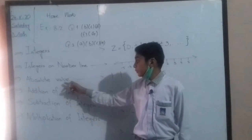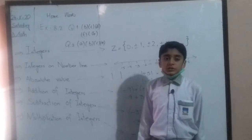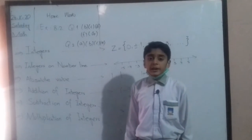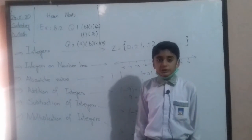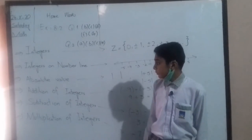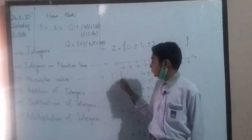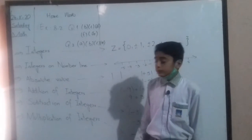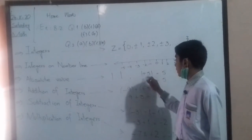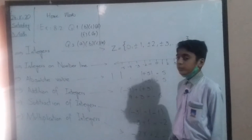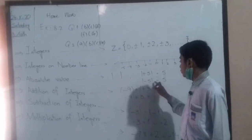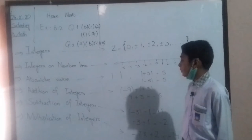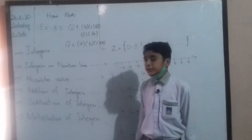Absolute value. The distance of any number from 0 on a number line is always positive, and this is called the absolute value. The absolute value of +5 equals 5, and the absolute value of -5 also equals 5.